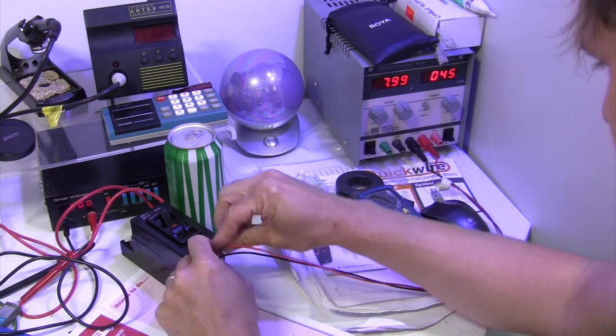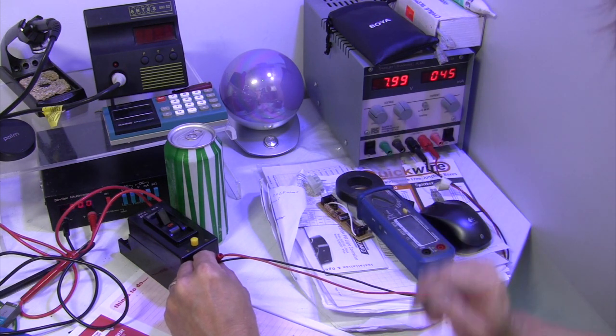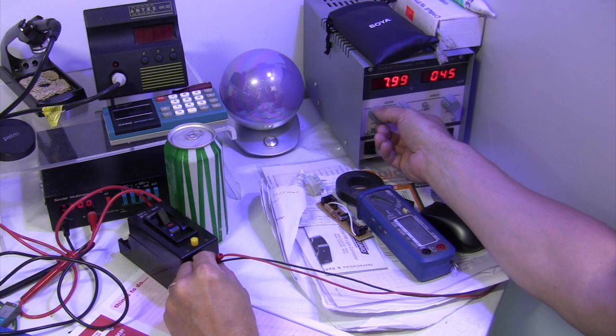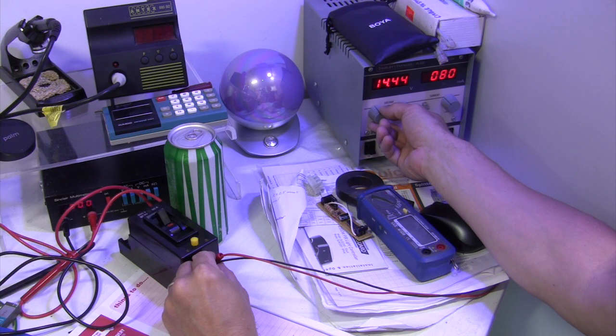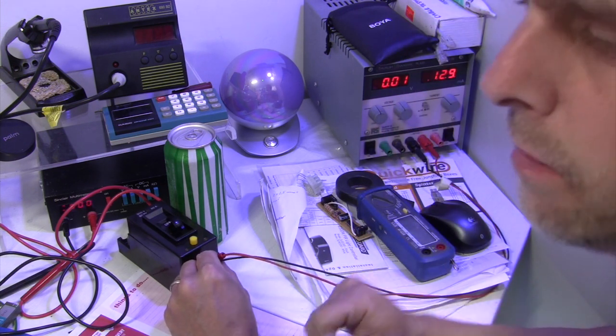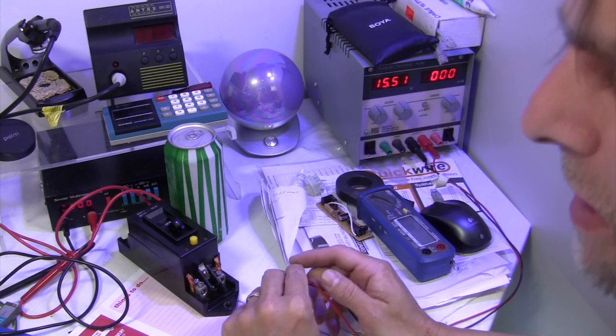If I put my connectors on there. You can see we're drawing about 45 milliamps through the coil at the moment. I'm just going to draw up the voltage until such point as it trips. Gee, it makes me jump every time. Okay, so it tripped at around 15 and a half volts.